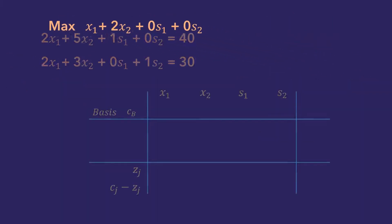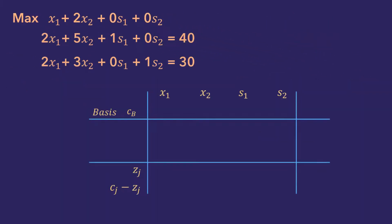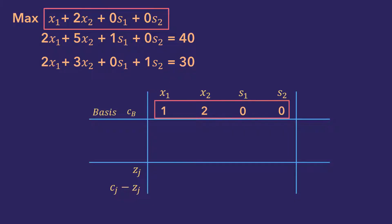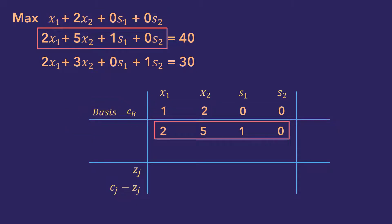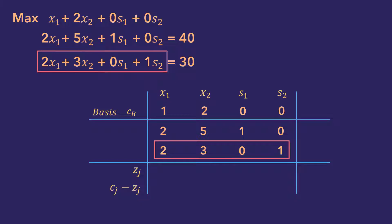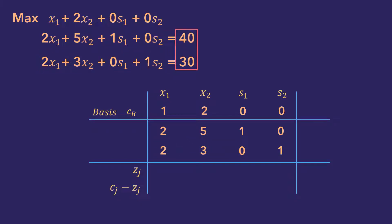Now, to translate them into tableau form, we can start with the objective coefficients 1, 2, 0, 0, which we call the cj row. Then the coefficients of the first constraint: 2, 5, 1, 0. And for the second constraint: 2, 3, 0, 1. The right-hand sides of the constraints are 40 and 30 respectively, which we refer to as the b column.